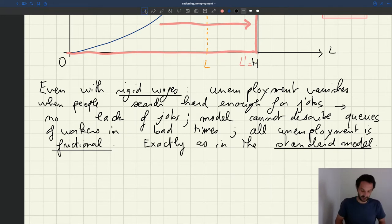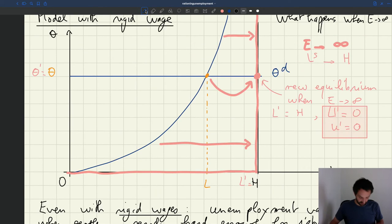There's no rationing, so any policies that really boost job search effort are going to reduce unemployment drastically. We can see here for this question of whether there are queues of workers or not, the type of wage function that we use is irrelevant. Rigid wage or bargain wage have no effect. What matters is really that the labor demand has this very specific and very peculiar horizontal shape, that it's perfectly elastic with respect to tightness.